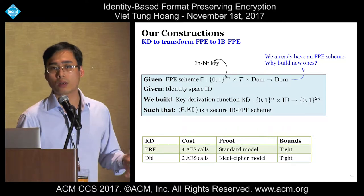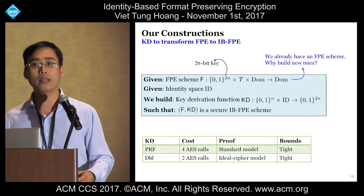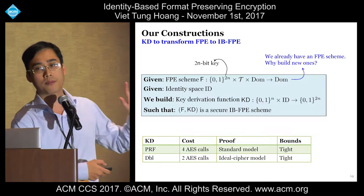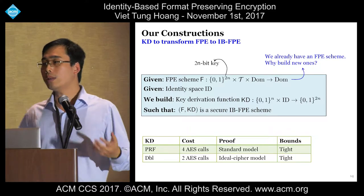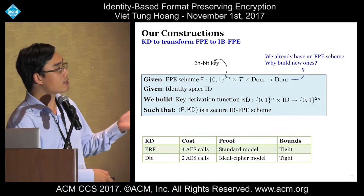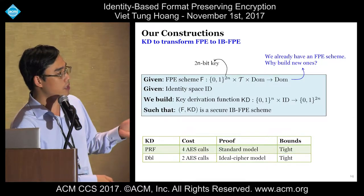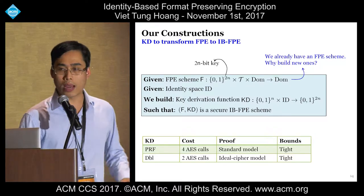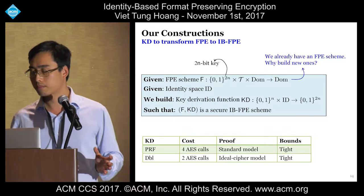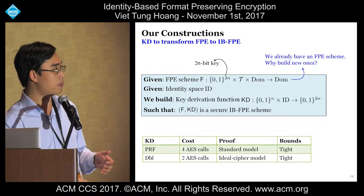We now want to build secure IBFPE schemes. Designing a good FPE scheme alone is difficult, and there are only a few good ones in the literature. Therefore, we aim to build a key derivation function to transform an existing good FPE scheme into a good IBFPE scheme. As informed by the attacks, you need to start with a base FPE scheme with 2λ-bit key length and then build a key derivation function with a proper signature. We have two constructions: the first makes four AES calls and is proven in the standard model; the second is faster but proven in the ideal cipher model. Both give pretty good bounds.